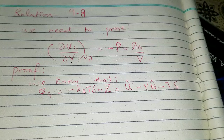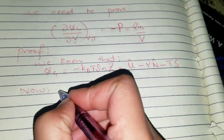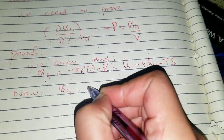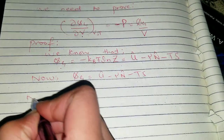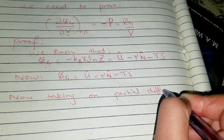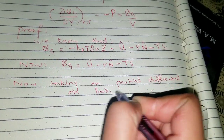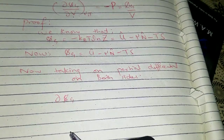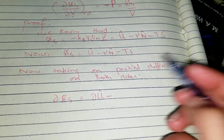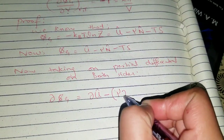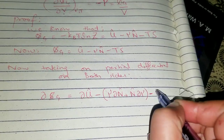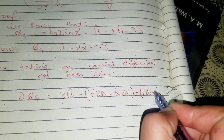Now we will take the differential on both sides. Taking partial differential on both sides: ∂Ψg equals ∂U̅ minus ∂(μN̅) minus ∂(TS). We apply the product rule: minus [μ as it is times ∂N̅ plus N̅ as it is times ∂μ], then minus [T as it is times ∂S plus S as it is times ∂T].